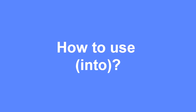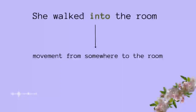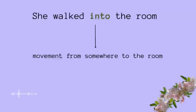Let's have a look at the following examples. She walked into the room. With the use of 'into' we are focusing on the movement — meaning she was somewhere else, maybe in the kitchen, the bathroom, or the living room, but now she has moved into the room. So you need to use 'into' to speak about movement from one place to another.